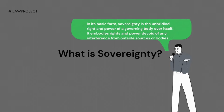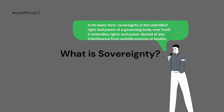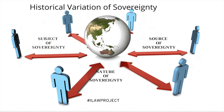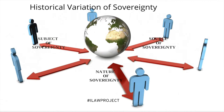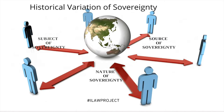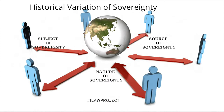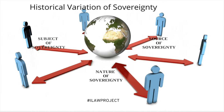Historically, the concept has been used in three main ways. First, the subject of sovereignty — a reference to a function or person. Second, the nature of sovereignty — a reference to the scope, whether limited or absolute. And third, the source of sovereignty — a reference to where sovereignty is derived from, whether from the law or outside the law.